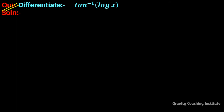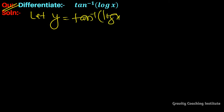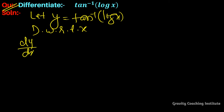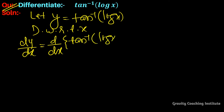Question: differentiate tan inverse of log x. First of all, let y equal to tan inverse log x. Differentiate with respect to x. dy upon dx equal to differentiate tan inverse log x with respect to x. We can use the derivative of tan inverse x and apply the chain rule.